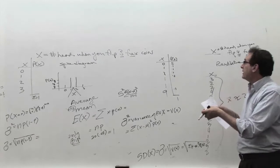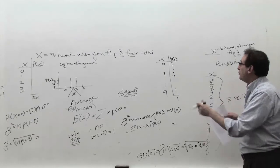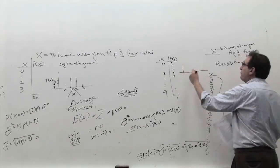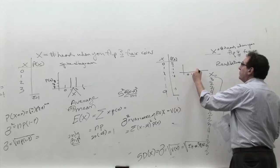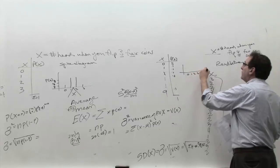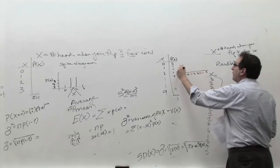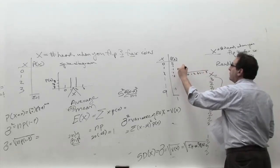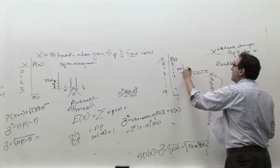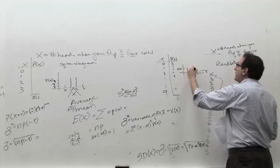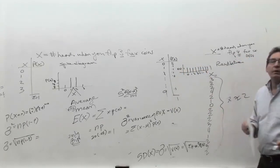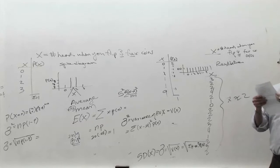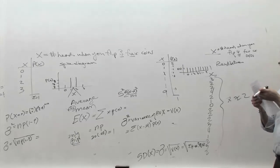Item number three says change into a picture. The relevant picture would be: how many zeros, ones, twos, threes, fours, fives, up to nines? The P of X would always be one out of ten, 0.1. So basically a picture where every bar is at one out of ten would be the proper answer for item number three.